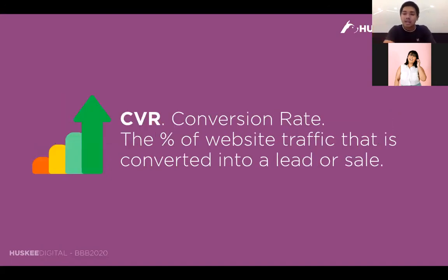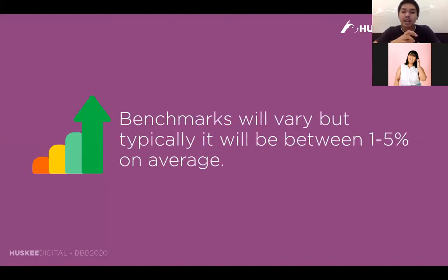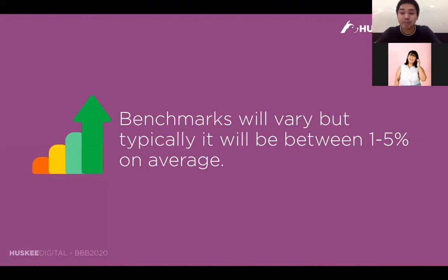Last metric: conversion rate. It's the percentage of website traffic that is converted into a sale or a lead — either the leads you generated through CPL or the new customers you acquired through CPA. Benchmarks here will vary, but typically you're looking at 1% to 5% on average. All the effort you make into bringing people to your website boils down to that 1% to 5% of people who end up becoming your customers. Sometimes you'll go lower, and in really great situations, you'll go higher.